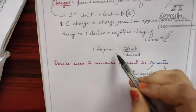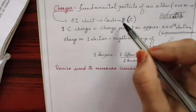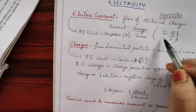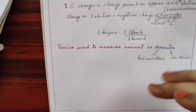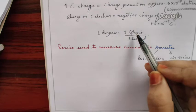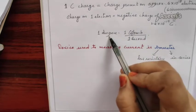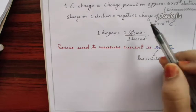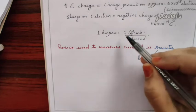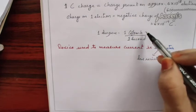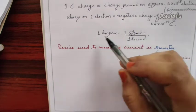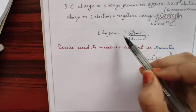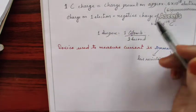The SI unit of charge is coulomb, denoted as C. If we rewrite the formula using SI units: one ampere equals one coulomb per one second. That means one ampere of current is equal to the flow of one coulomb charge in one second. You can also define one coulomb as one ampere of current flowing for one second.